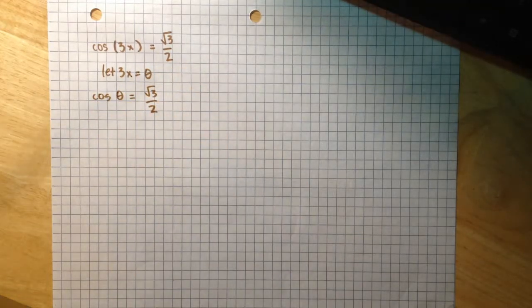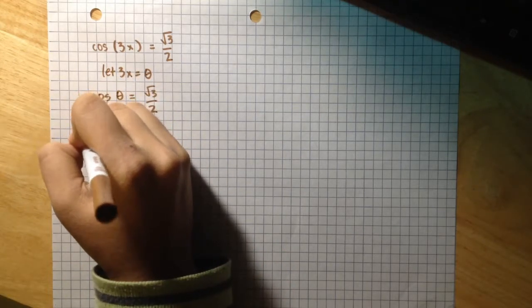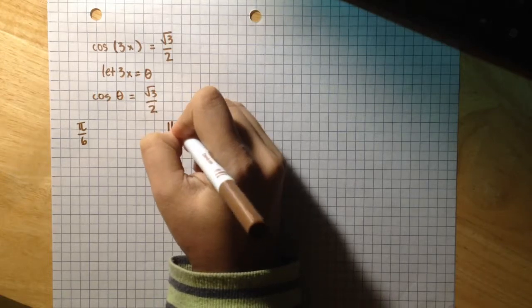Cosine of theta equals radical 3 over 2. Looking at our unit circle, we find two angles whose cosine is equal to radical 3 over 2, and those two angles are π over 6 and 11π over 6.